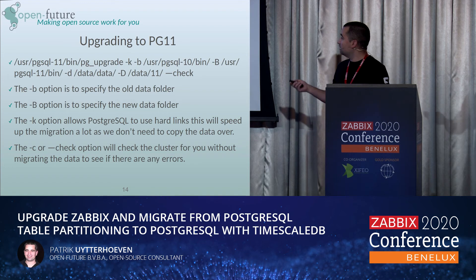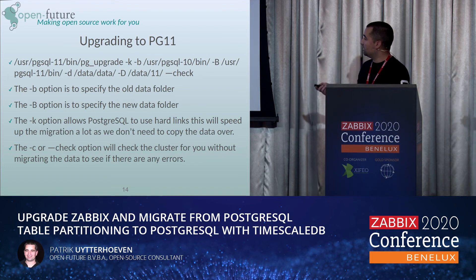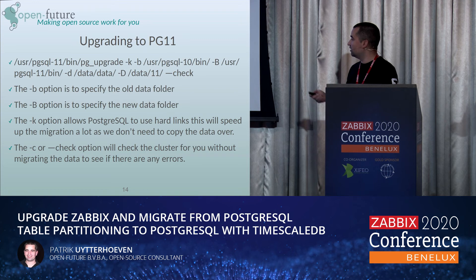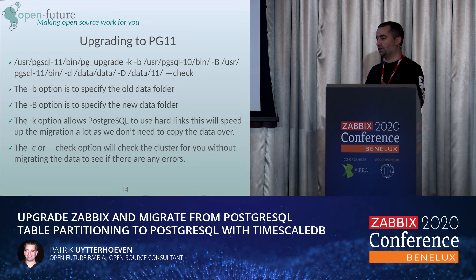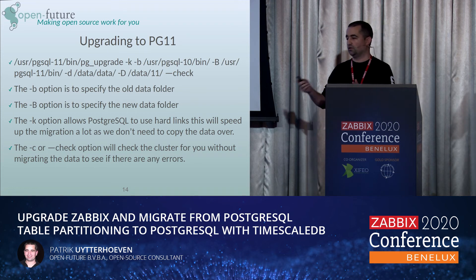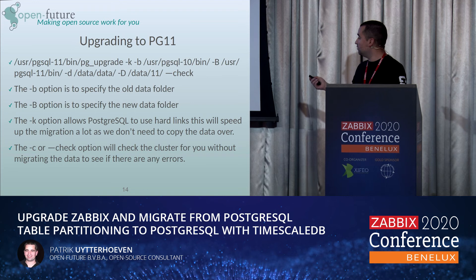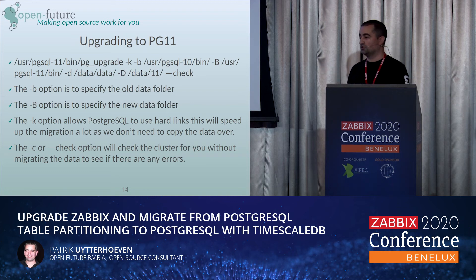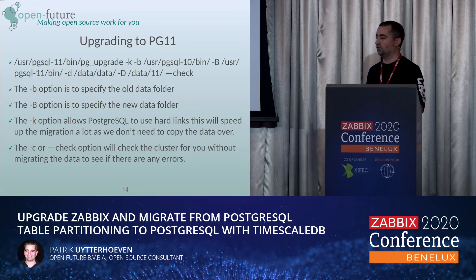When running pg_upgrade, you use the -b flag to specify the old binary folder and the capital -B for the new binary folder. The -k option is particularly useful: without it, pg_upgrade copies all data from one location to the other. With -k, it uses hard links instead of copying, so the upgrade goes very quickly. You can also use the --check option to verify everything will run as expected before committing to the migration.